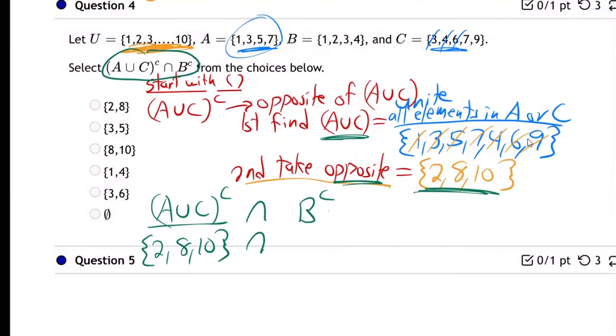Now we need B complement, and you know what that means. That's the opposite of B. Opposite of B. So here's B. So the opposite of that, B is one, two, three, four.